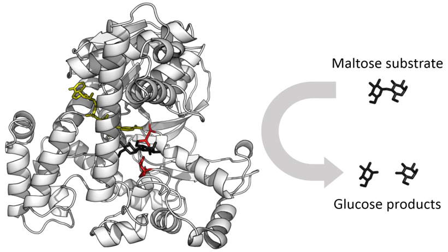Chemically, enzymes are like any catalyst and are not consumed in chemical reactions, nor do they alter the equilibrium of a reaction. Enzymes differ from most other catalysts by being much more specific. Enzyme activity can be affected by other molecules. Inhibitors are molecules that decrease enzyme activity, and activators are molecules that increase activity. Many therapeutic drugs and poisons are enzyme inhibitors.